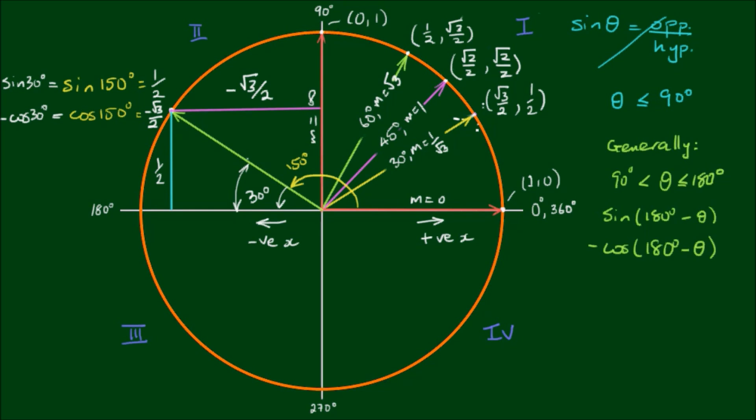Now as an exercise, see if you can find the sine and the cosine of angles in the third and fourth quadrants. Say for example, the angle of 225 degrees, or an angle of 330 degrees, using the same method as I've shown you in quadrant number 2.